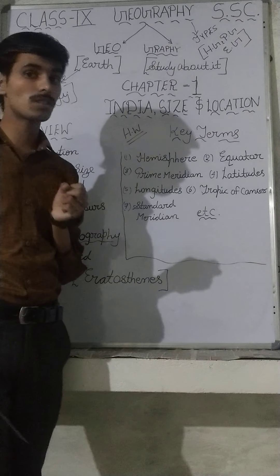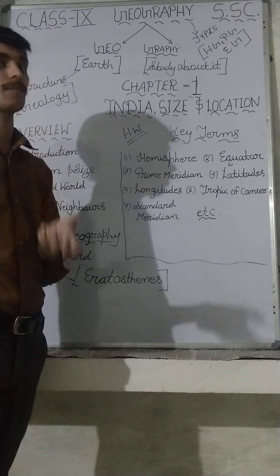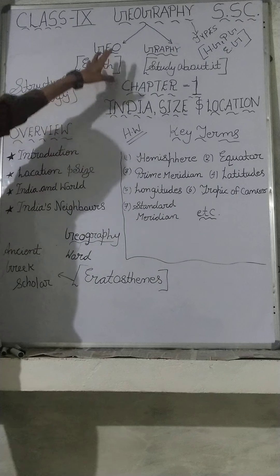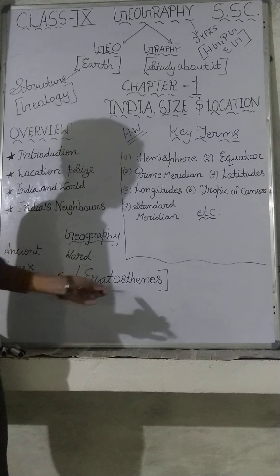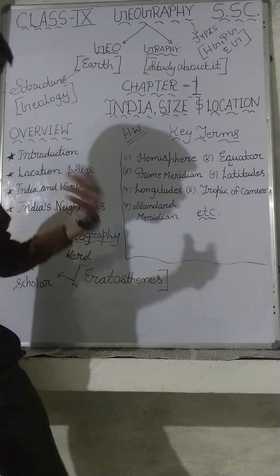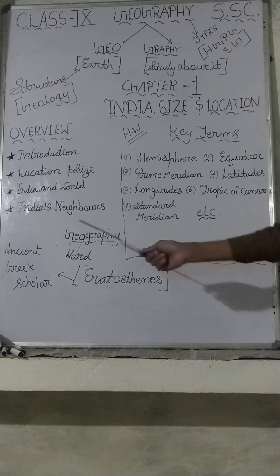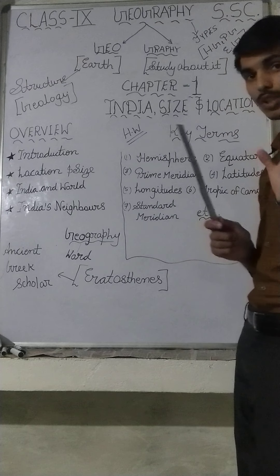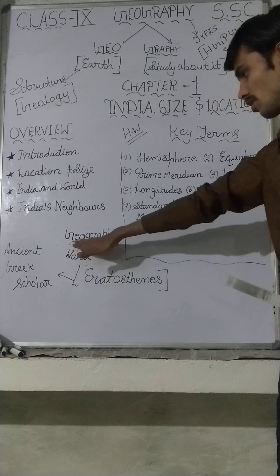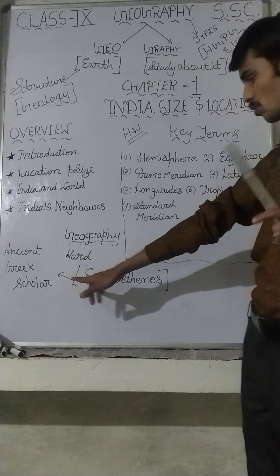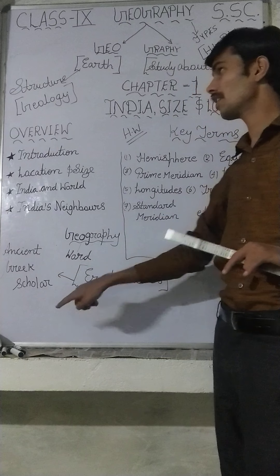Now, who was the first person to use the word geography? That was Eratosthenes. Who was Eratosthenes? He was an ancient Greek scholar. The word geography was first used by Eratosthenes, an ancient Greek scholar.